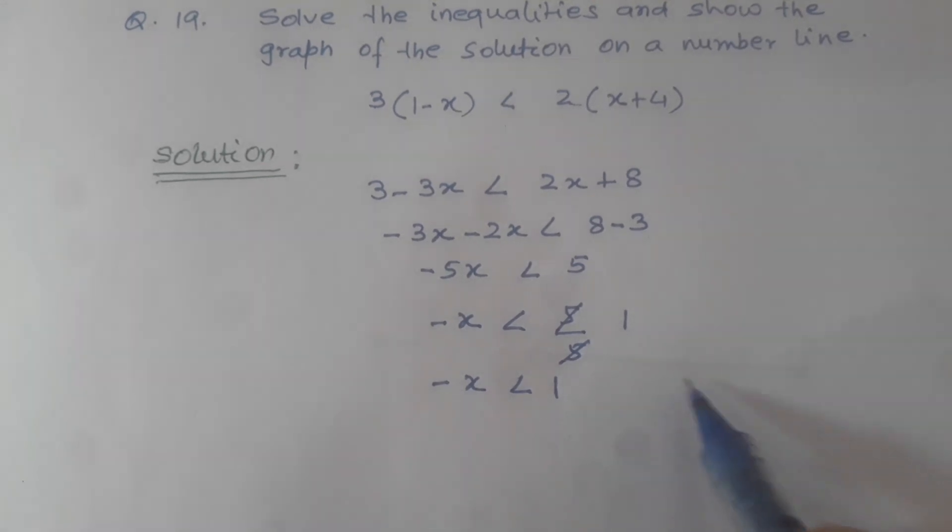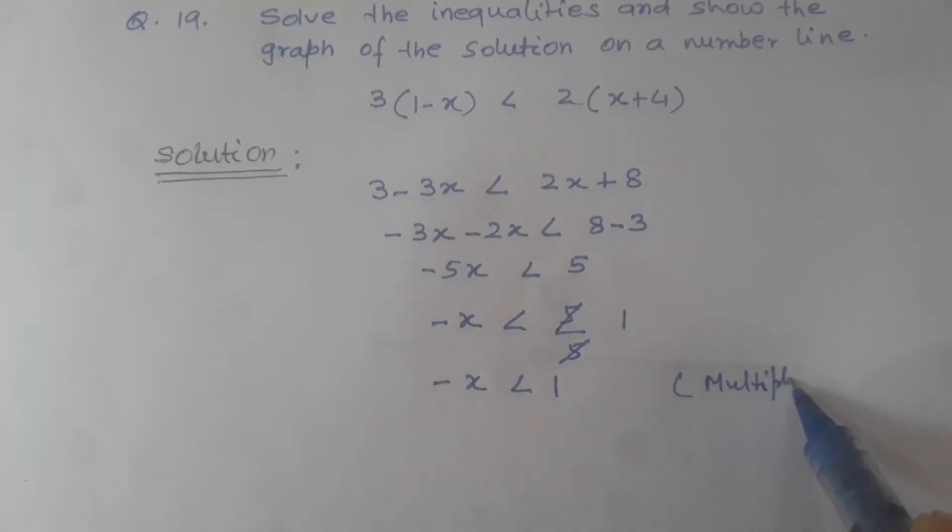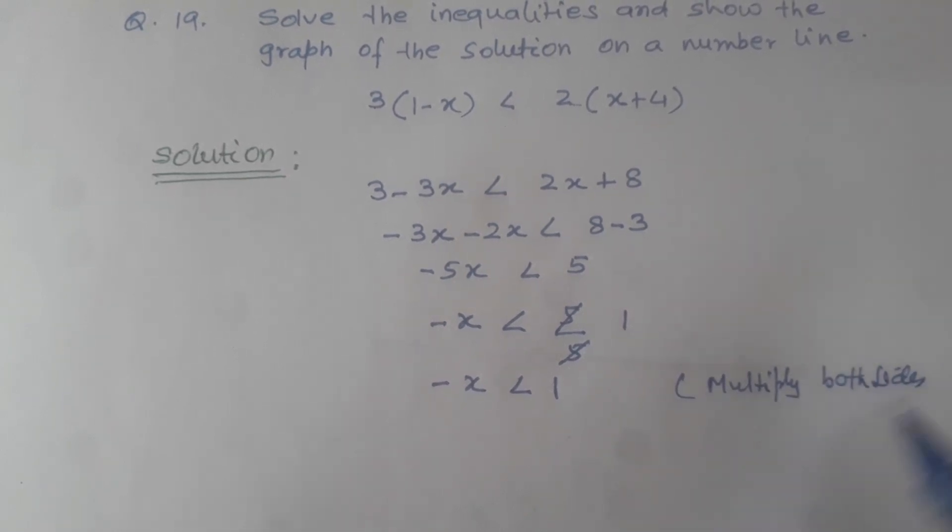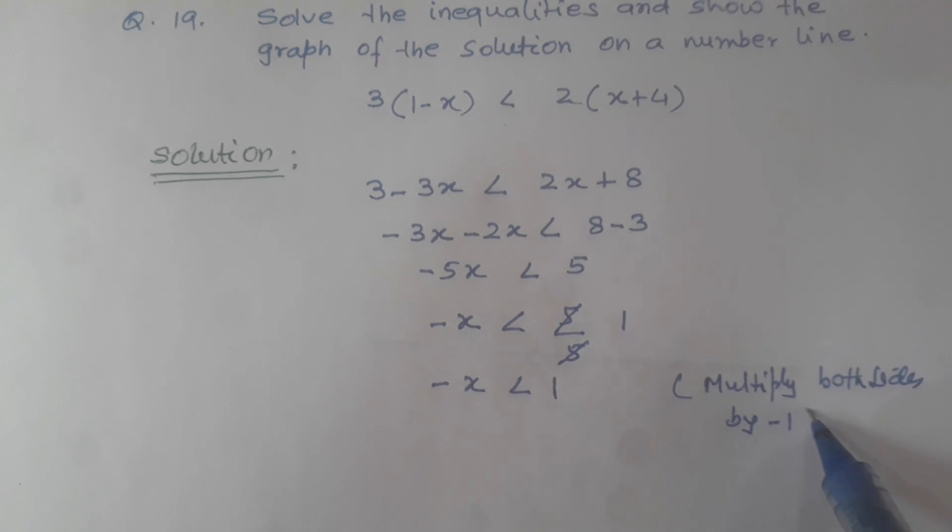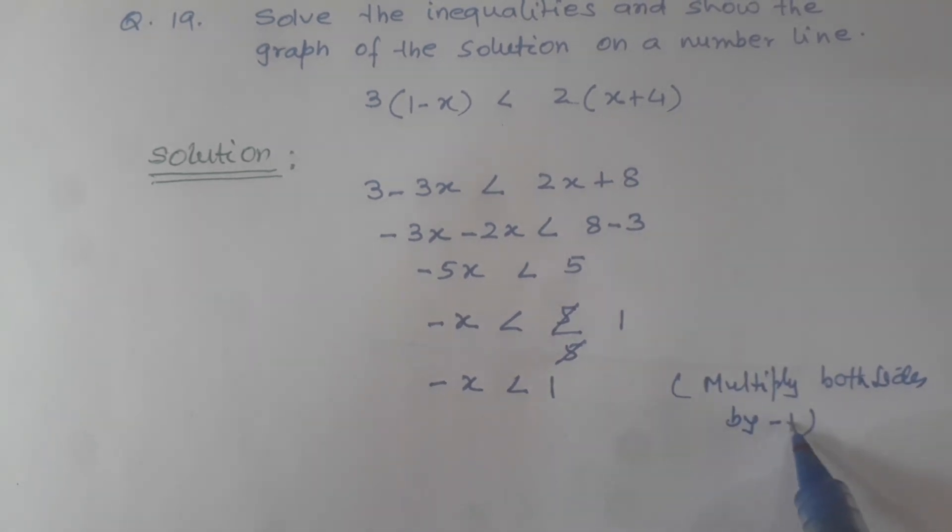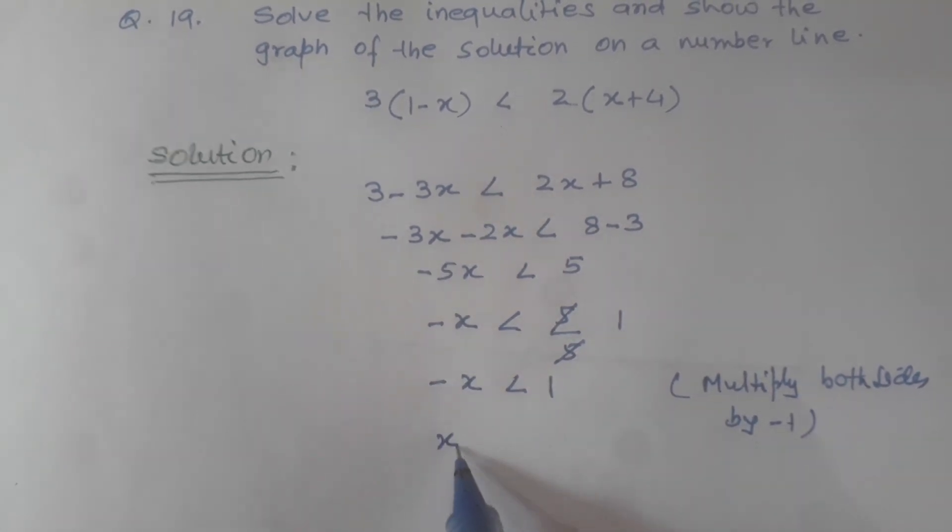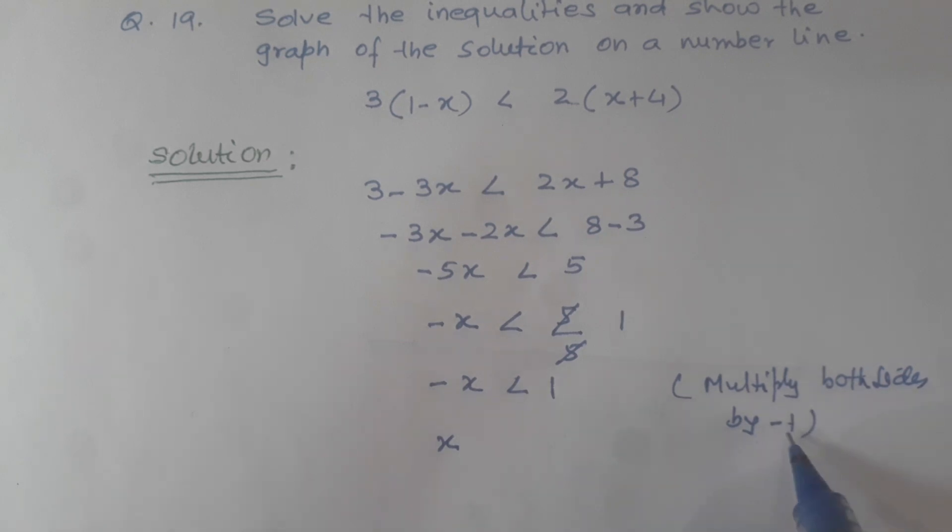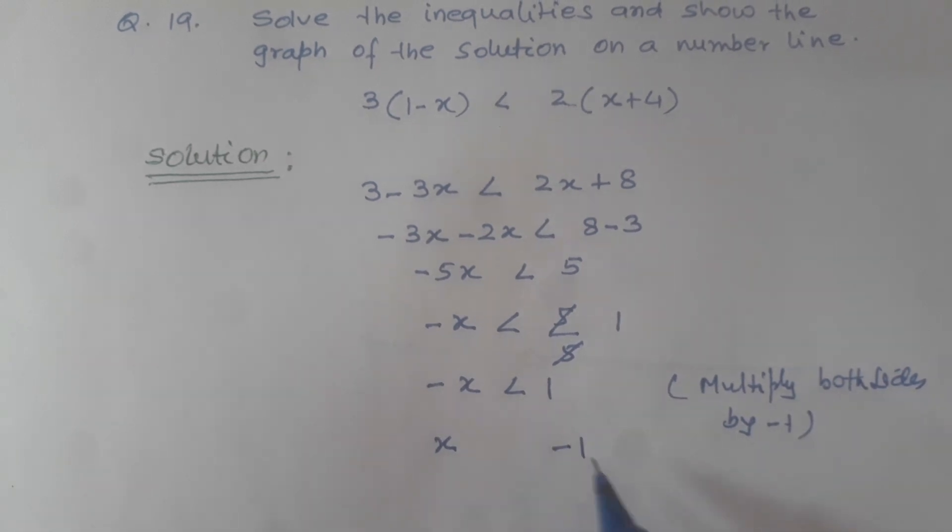Minus 1 times minus x equals x, and minus 1 times 1 equals minus 1. By the rule of inequalities, when both sides are multiplied by a negative number, the inequality sign gets reversed.